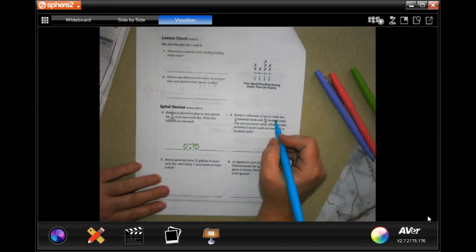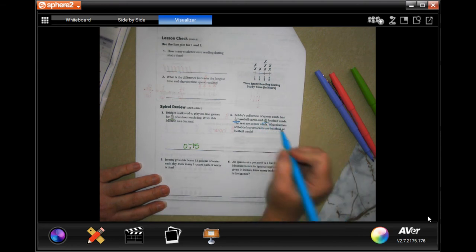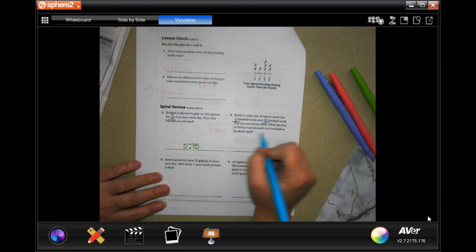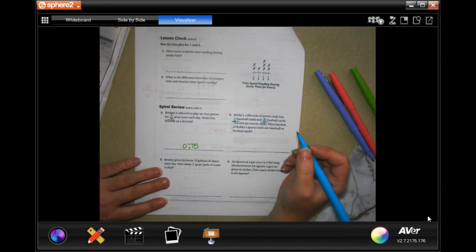Bobby's collection of sports cards has three-tenths baseball cards, 39/100 football cards. The rest are soccer cards. Which fraction of Bobby's sports cards are baseball or football?